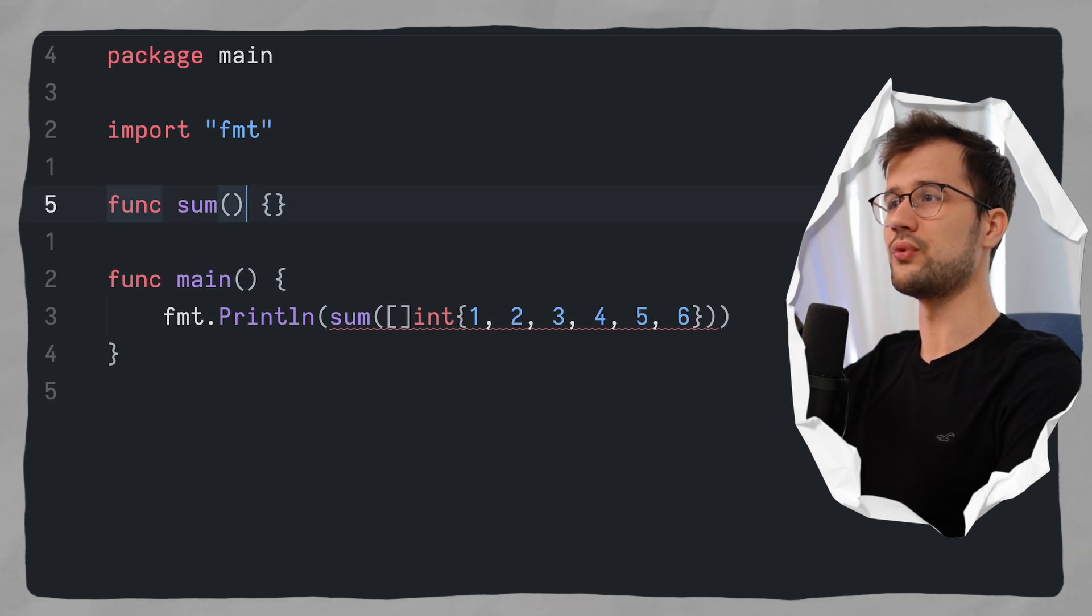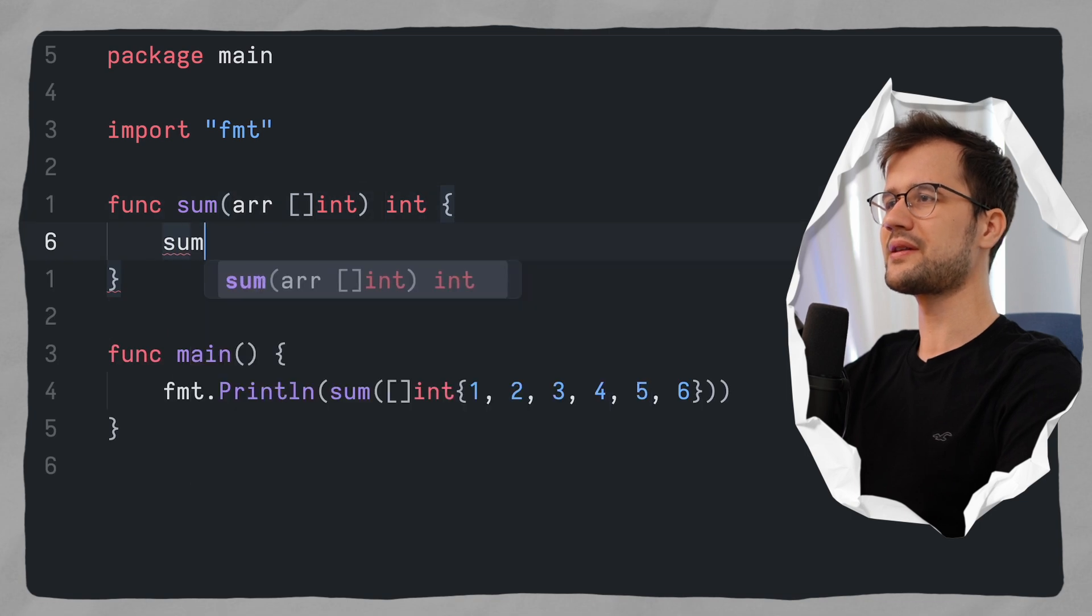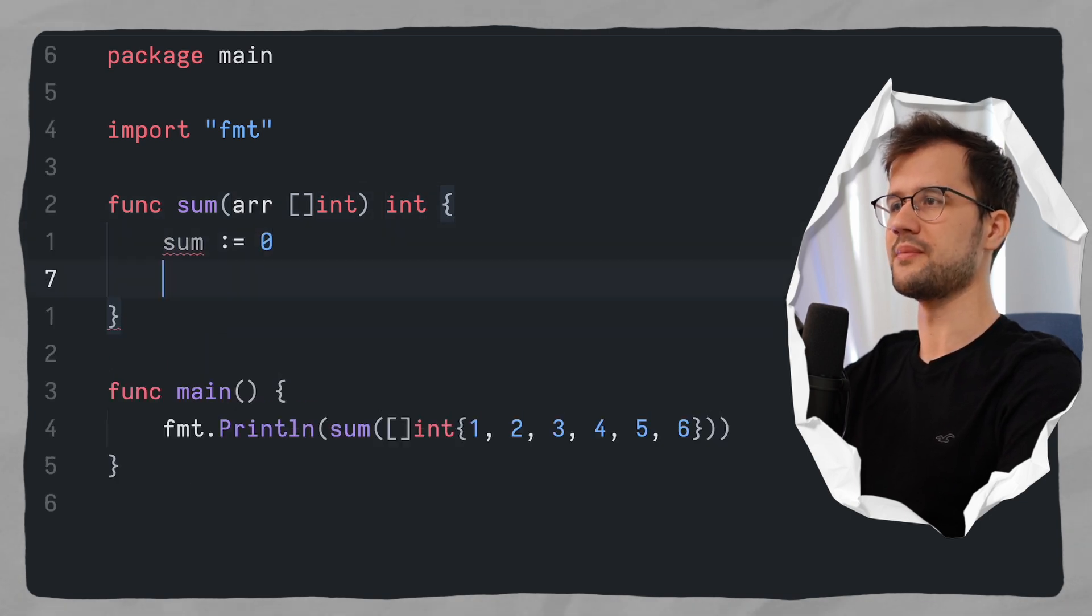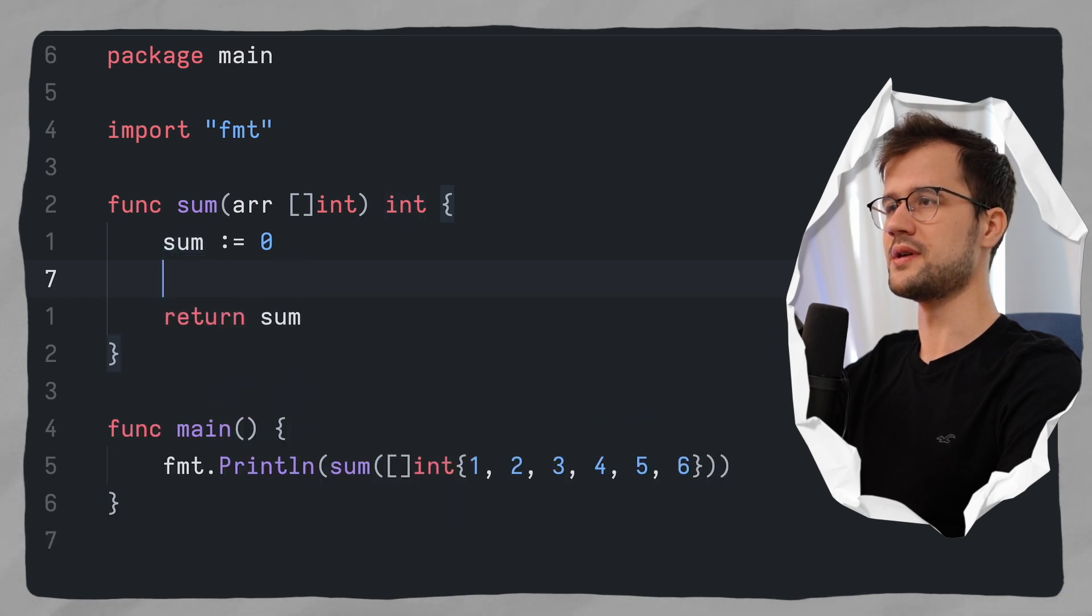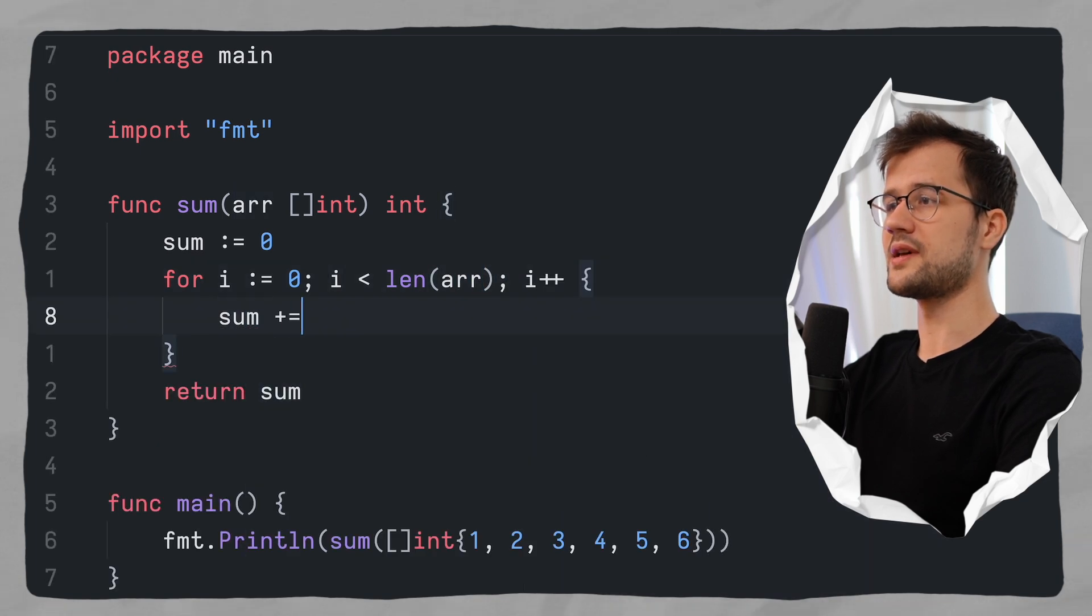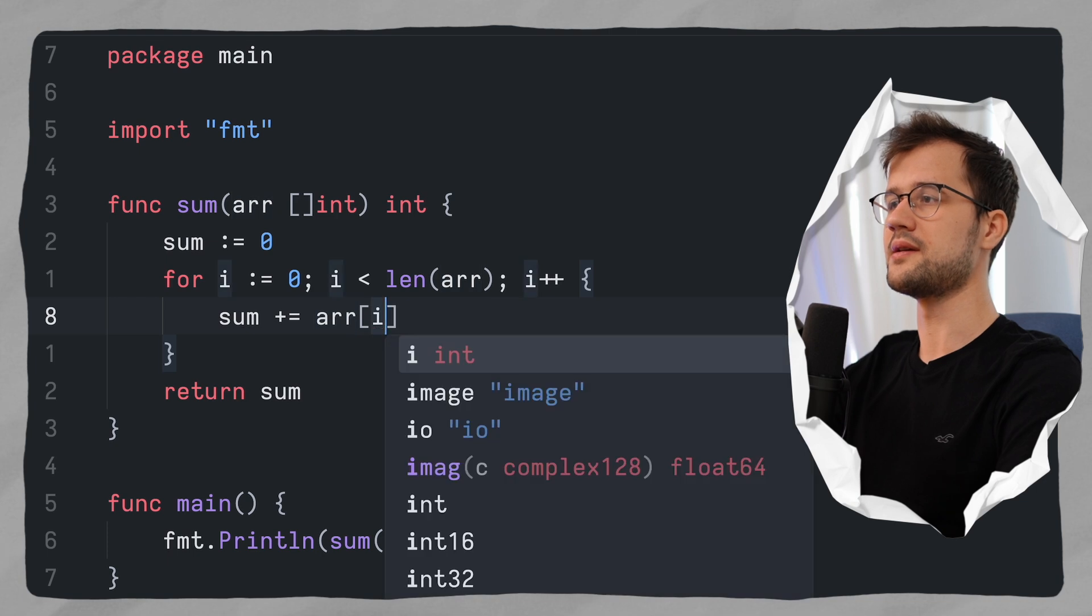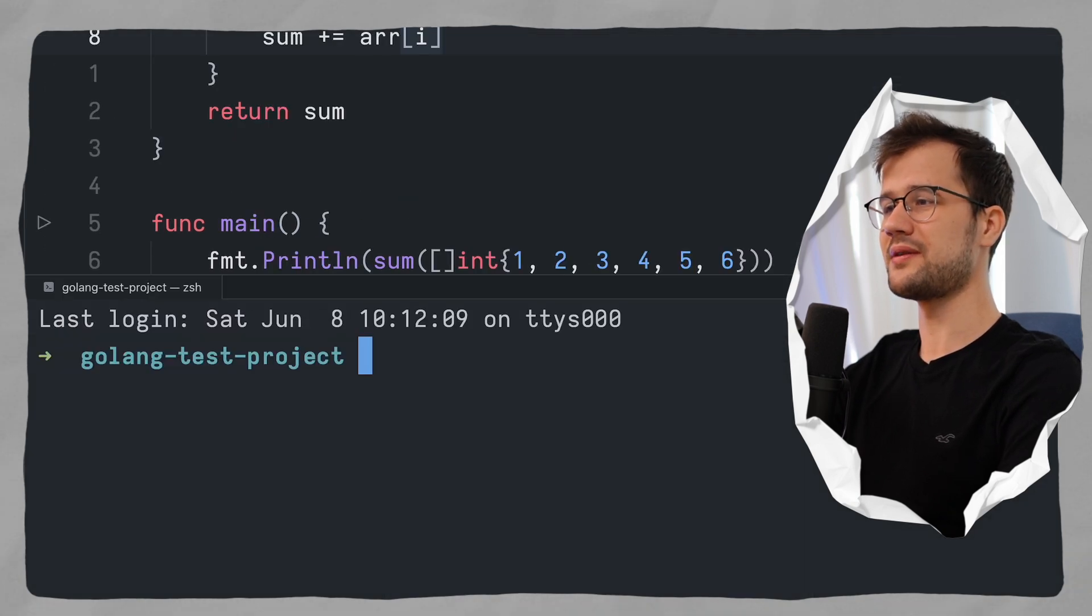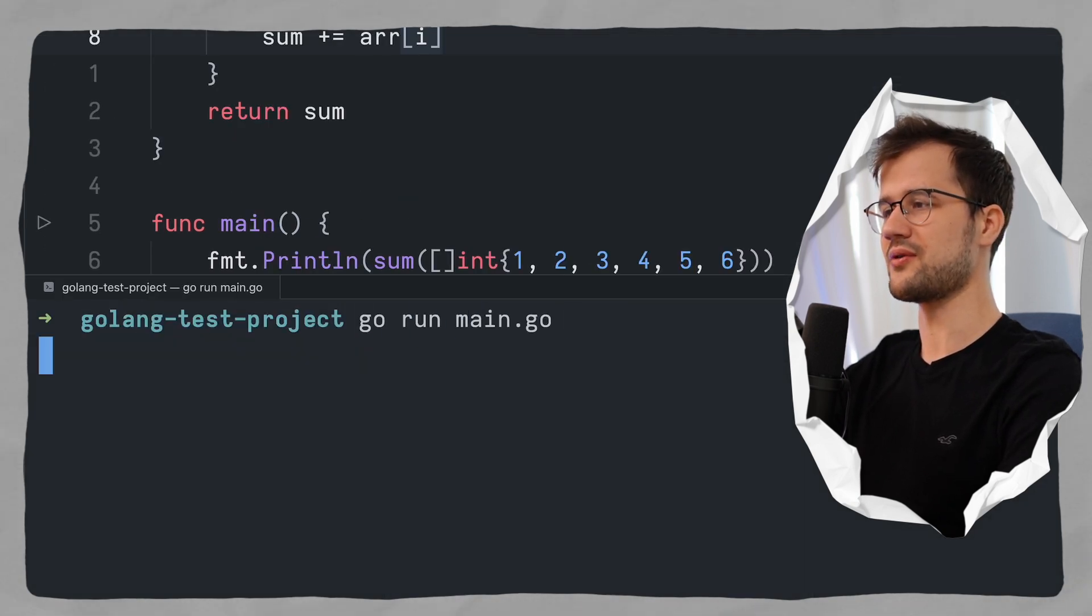So like I said, this should return an integer in the end. And here we are going to take in an array of numbers, which is going to be an int slice. The logic is pretty easy to understand. We are just going to return the sum here. And in the main logic, we are just going to iterate over the array basically. And then we say sum plus equals to array at index i. So let's quickly run this function with go run main.go. And what we got is 21.